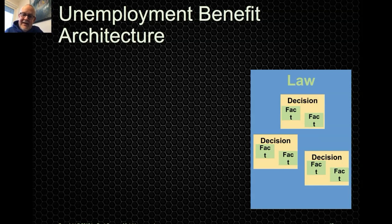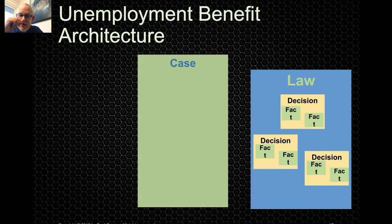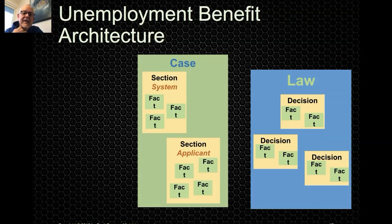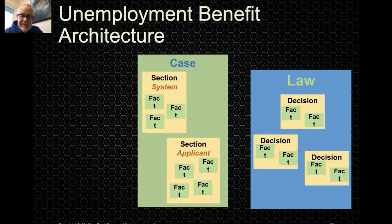That's nice for the law, but it doesn't necessarily make sense for a person trying to apply for the benefit, because some of these facts come from other sources. So we create another structure called a case. Your application turns into a case — a case we're working to decide: should you get unemployment benefits or not? We model this as facts grouped together. Some facts come from the system: we can look up your birth date, your employment history. But there are other things the applicant needs to provide — things like what day would you like employment benefits, when did you lose your job, do you have children, are the children less than 18 years old. There's a whole raft of other questions and facts needed to make these decisions.